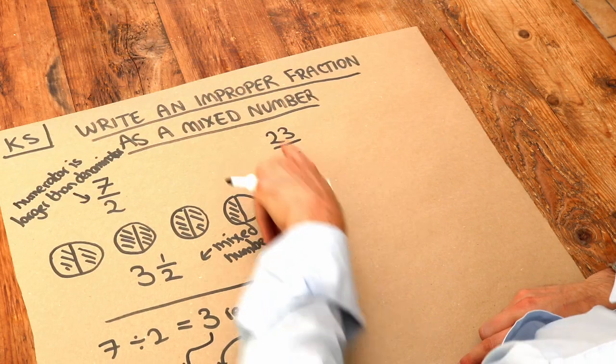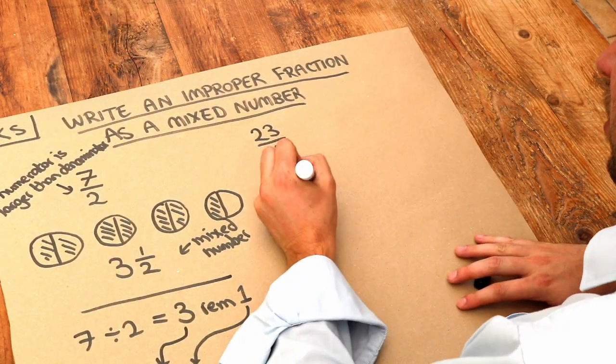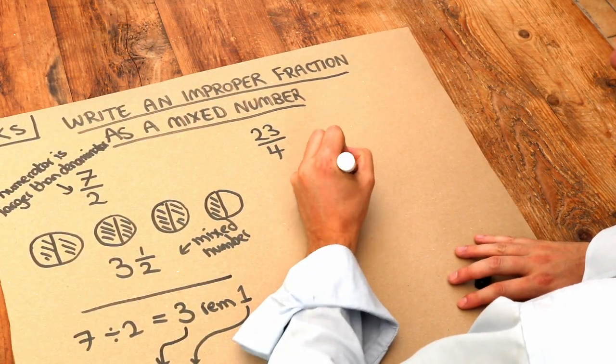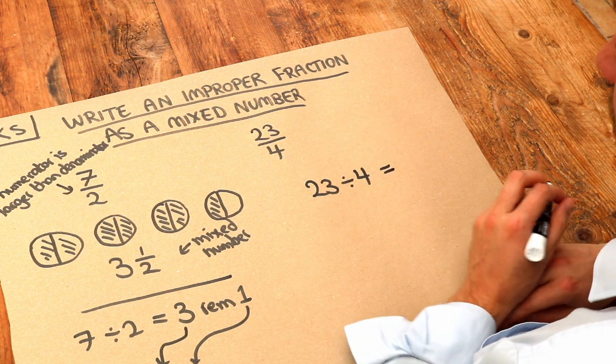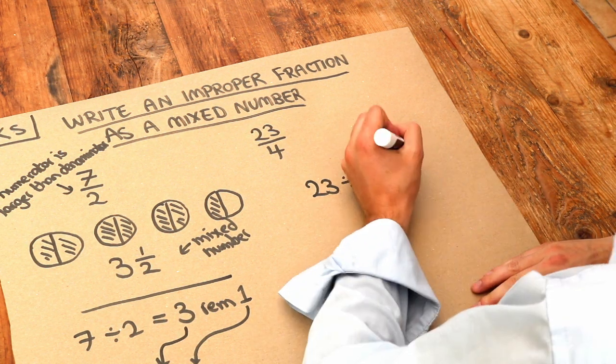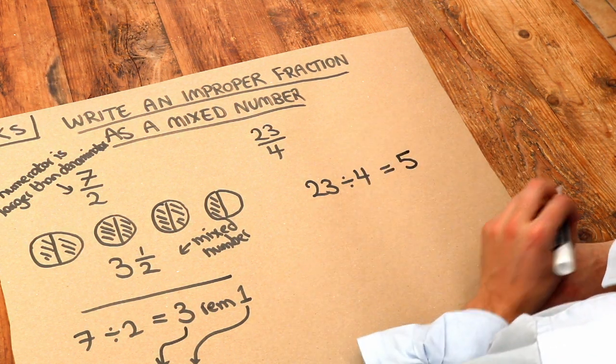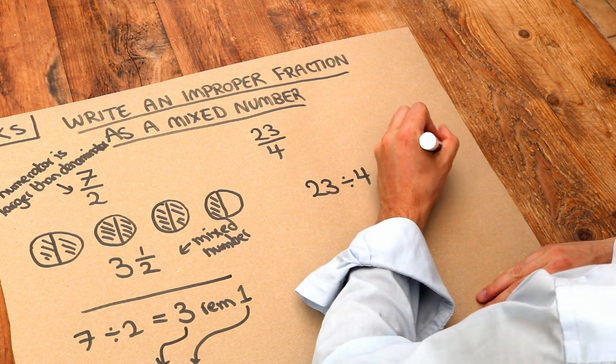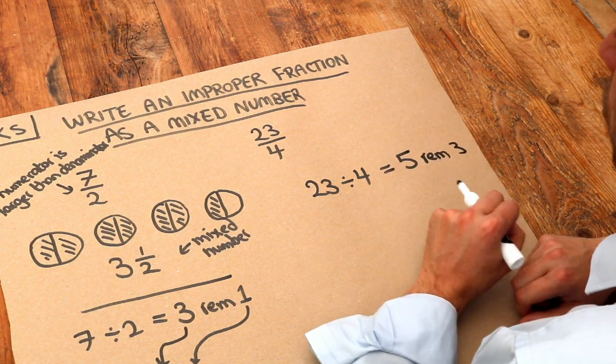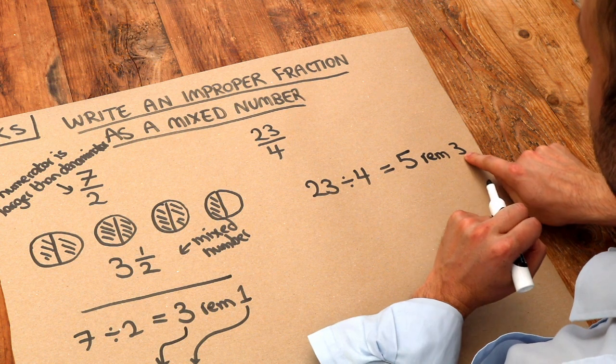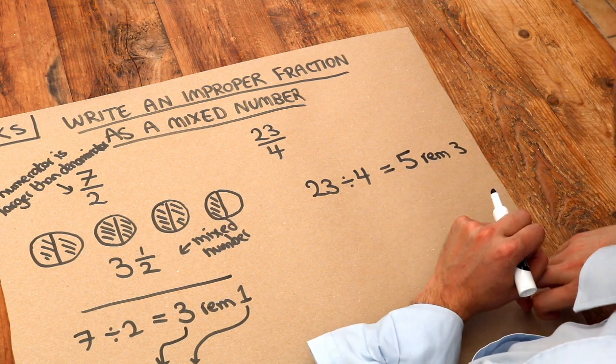Let's apply this method to 23/4. We do 23 divided by 4. How many times does 4 go into 23? It goes 5 whole times with a remainder of 3, because 5 times 4 is 20, but we still have an extra 3 to make up 23.